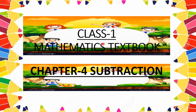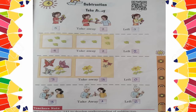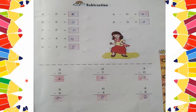Good morning class. First class is from the math textbook and we have started Chapter 4: Subtraction. What's the chapter's name? Subtraction. So class, yesterday you understood about subtraction — subtraction means taking away whatever you have. Someone takes some objects from you and whatever is left is called subtraction. Yesterday we solved some questions, so the next question we will start today is this one.